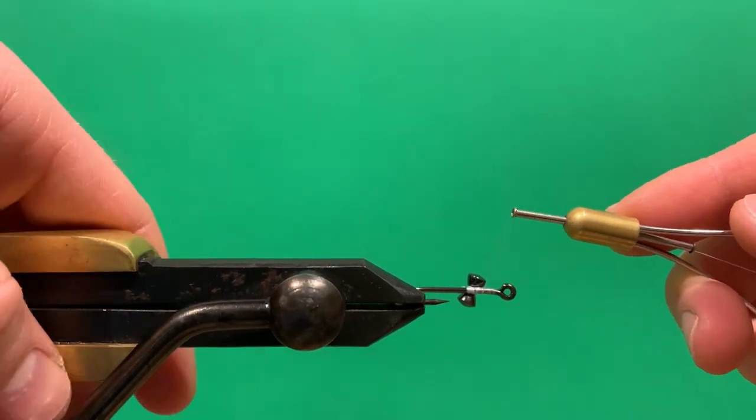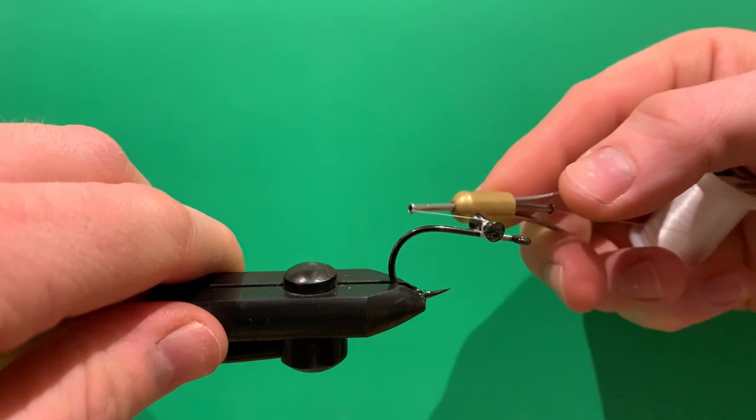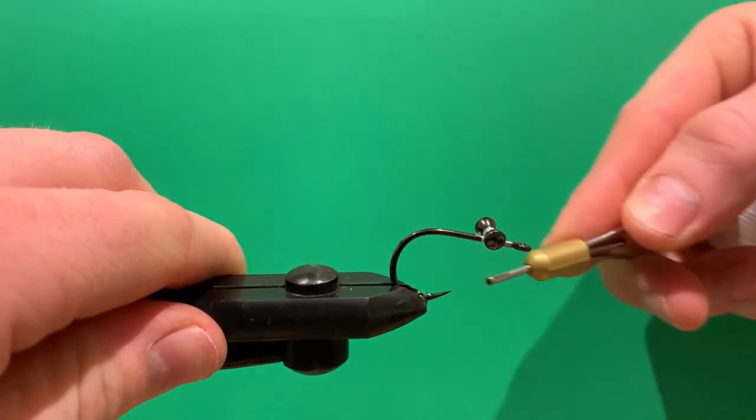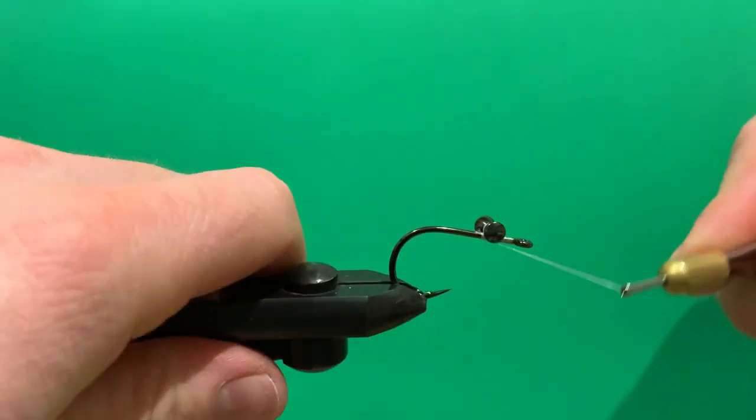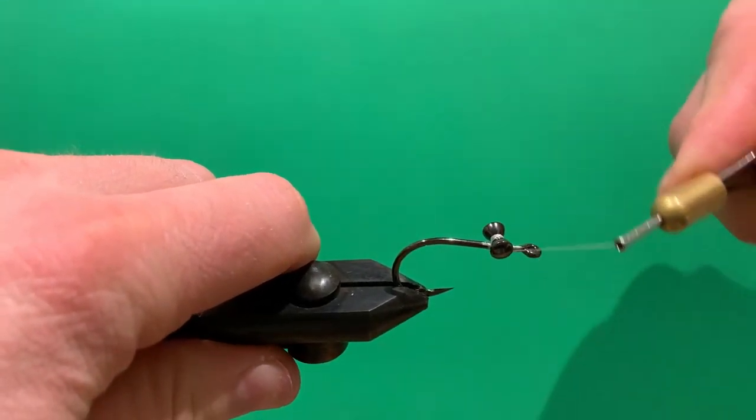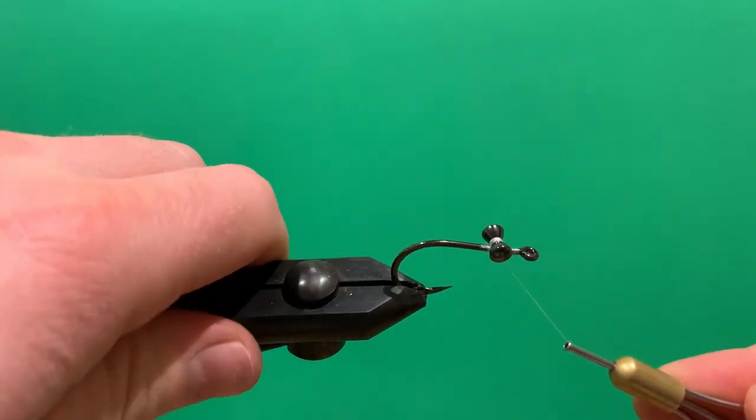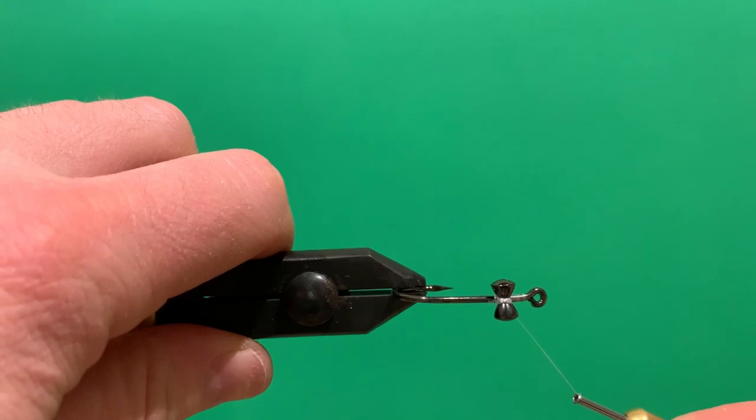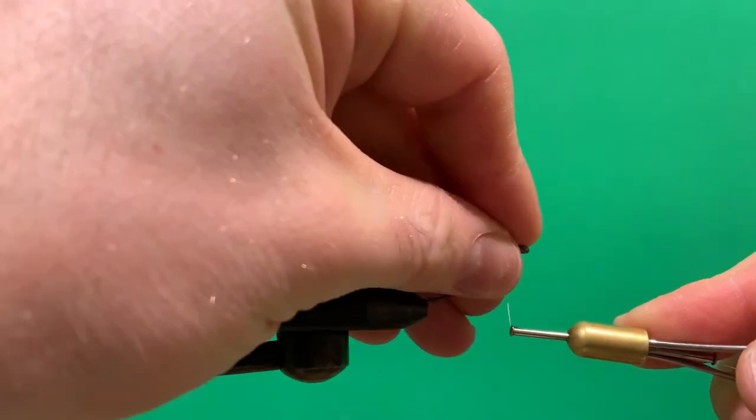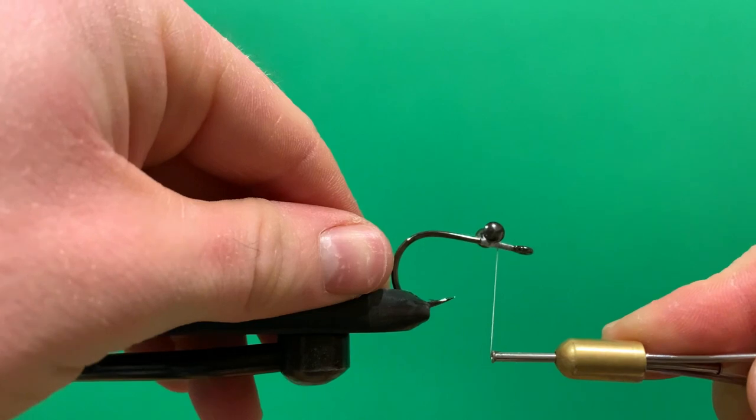Make sure the eyes are sitting on top of the hook—each one of these turns will help bring back the eyes and sit them square on the hook. Once your eyes are sitting square, just get a few more wraps onto the shank to lock your thread.